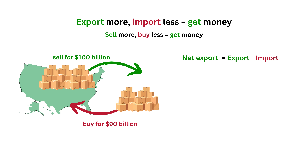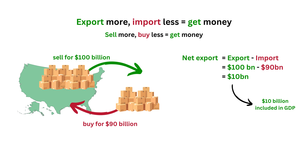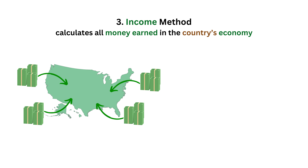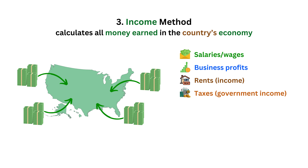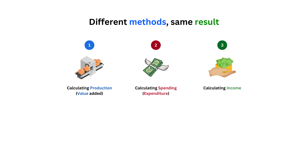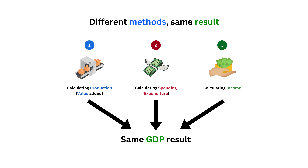If a country exports more than it imports, it makes more money, which is included in GDP. The third method is calculating the income — this looks at the total income earned from producing goods and services. It includes salaries, business profits, rents, taxes, and other types of income, while subtracting any subsidies provided by the government. The result is the total GDP. While the methods are different, if calculated correctly, they should all lead to the same result.